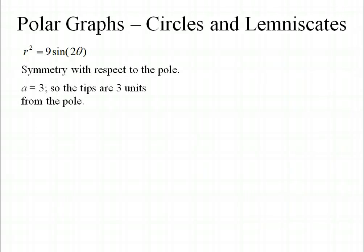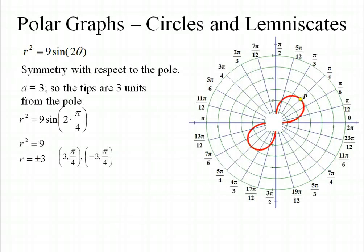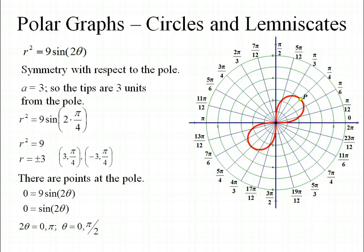Let's try a sine graph: r squared equals 9 sine 2 theta. Since we're using the sine, we know we have symmetry with respect to the pole, and the tips are 3 units away from the pole. This graph has symmetry with respect to the line theta equal pi over 4, so I'll plug pi over 4 into the equation. We end up with r equals 3 and negative 3, which are the tips of the figure 8. You have the point at the pole and the two tips. To verify the point at the pole, plugging in 0 for r gives two angle measures with zero radius length: theta equals 0 and pi over 2.